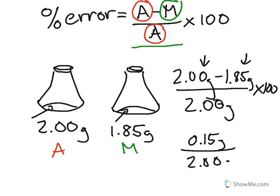We need to go ahead and divide this by 2.00, multiply that by 100. So if we go ahead and plug that into our calculators, divide by 2, and multiply it by 100, we get a value of a positive 7.5%. So that's our percent error for our experiment.